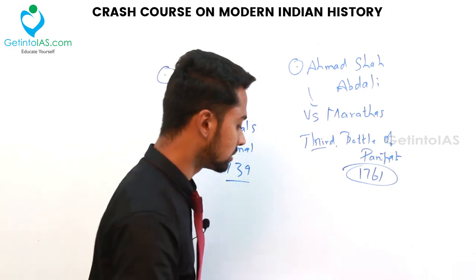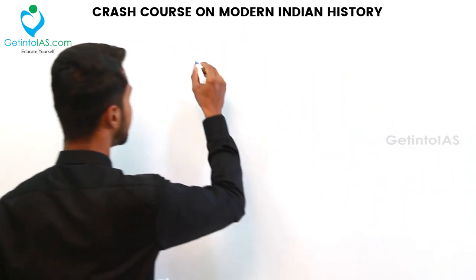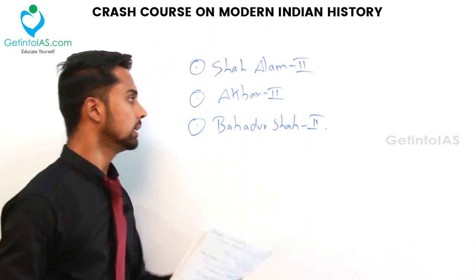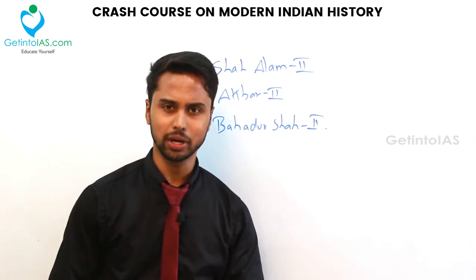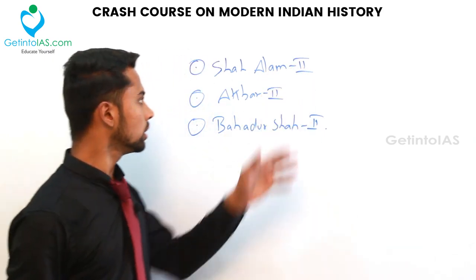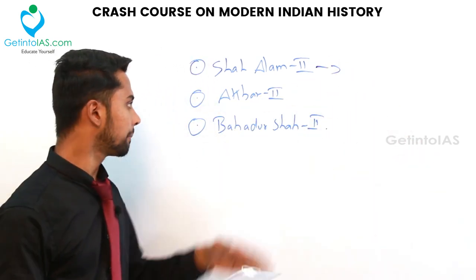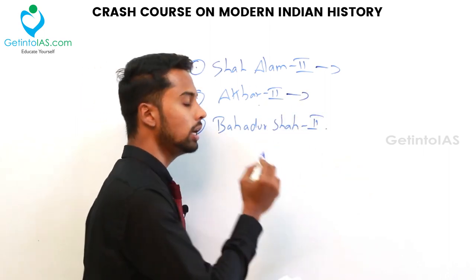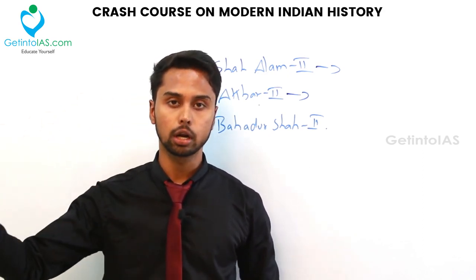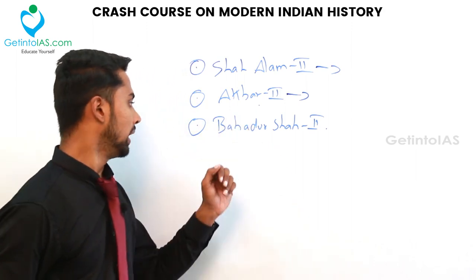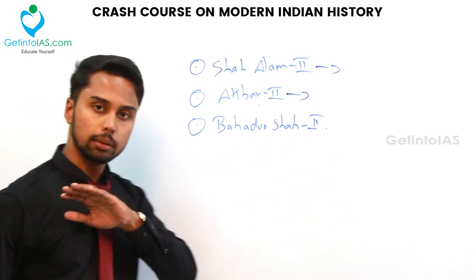After the invasions of Nadir Shah and Ahmad Shah Abdali, the Mughals were totally crushed but simply continued to exist. The later Mughal rulers included Shah Alam II (related to the Battle of Buxar, 1764); Akbar II, who gave the title of 'Raja' to Ram Mohan Roy; and Bahadur Shah II, who is related to the Revolt of 1857. With the end of Bahadur Shah II, the Mughals were totally finished. So the later Mughals started with Bahadur Shah I and ended with Bahadur Shah II.